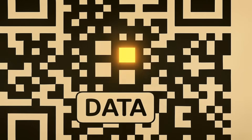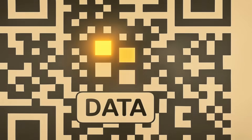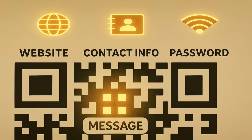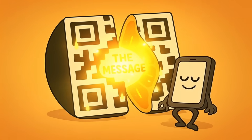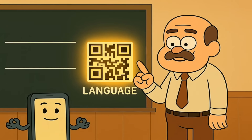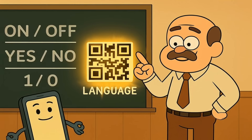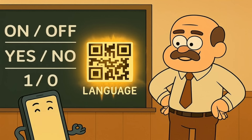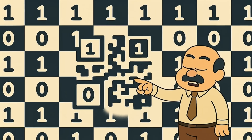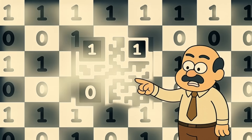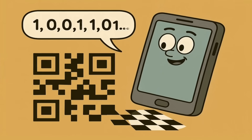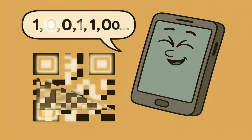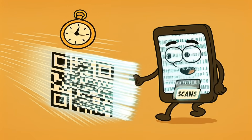All those other hundreds of tiny black and white squares packed into the middle? That's the data — the actual website link, the contact information, or the Wi-Fi password. It's the juicy center of the QR code. The language it uses is the simplest language in the world: a language with only two words — on and off, or yes and no, or one and zero. In a QR code, a black square means one and a white square means zero. Your phone's camera goes through the grid one square at a time and calls out what it sees: one, zero, zero, one, one, zero, one. It does this hundreds of times in a fraction of a second.